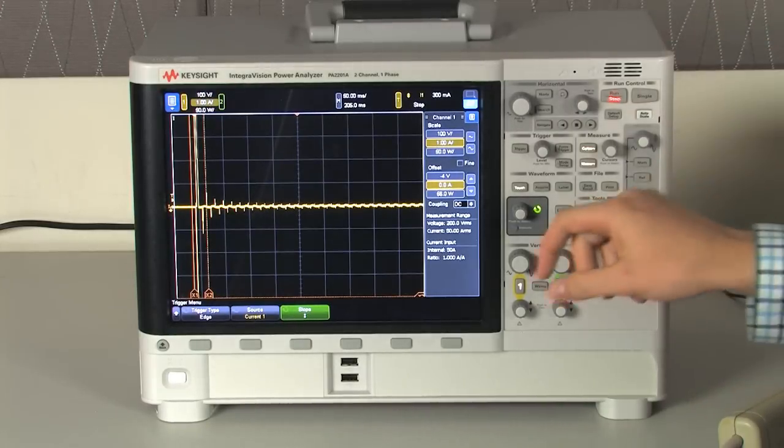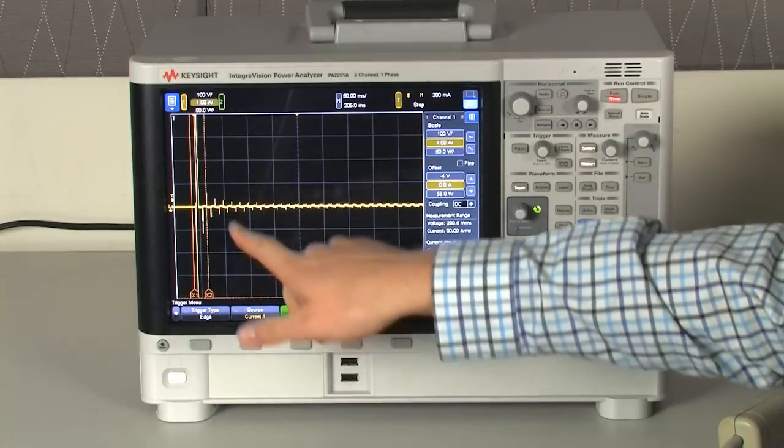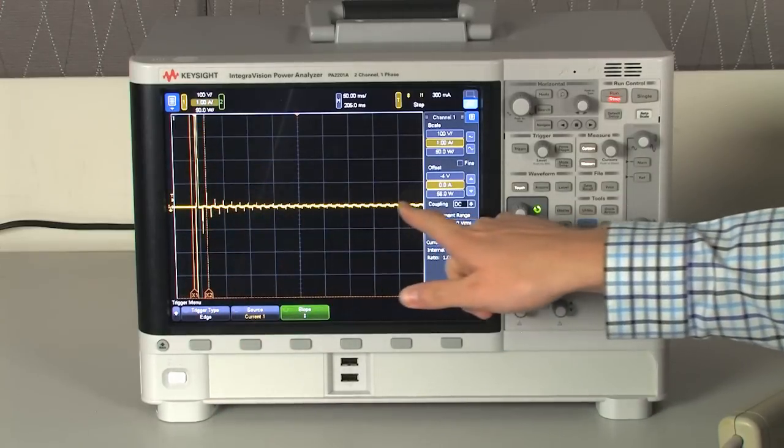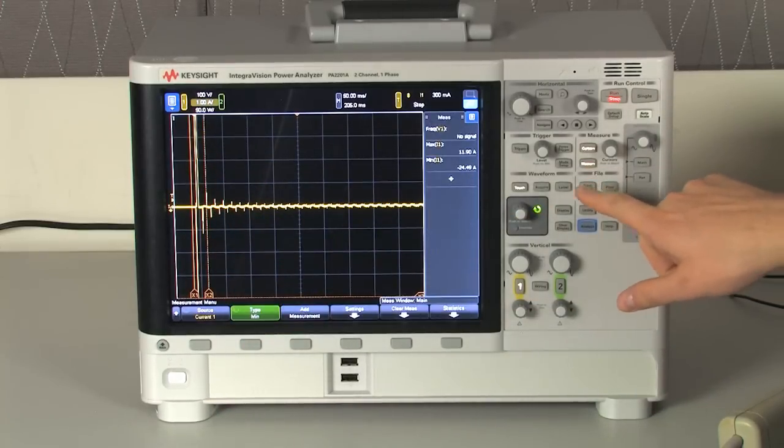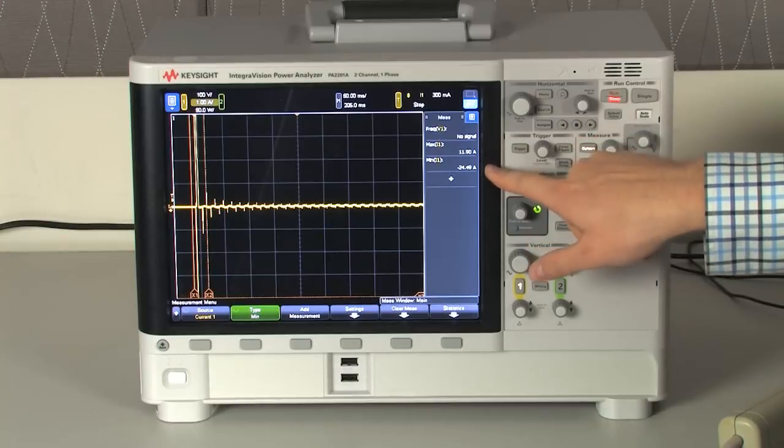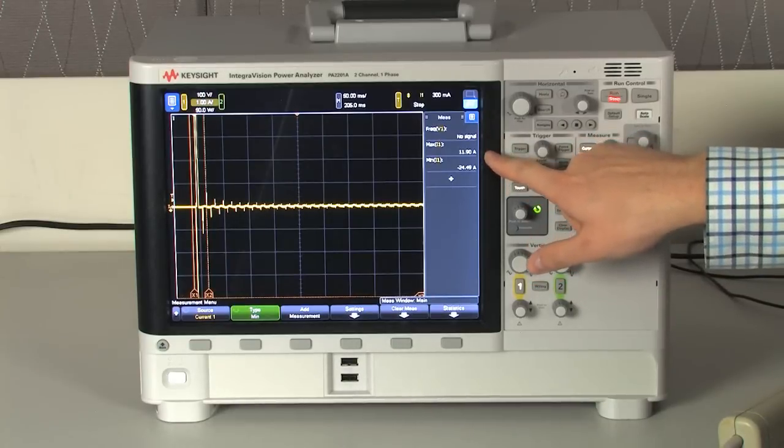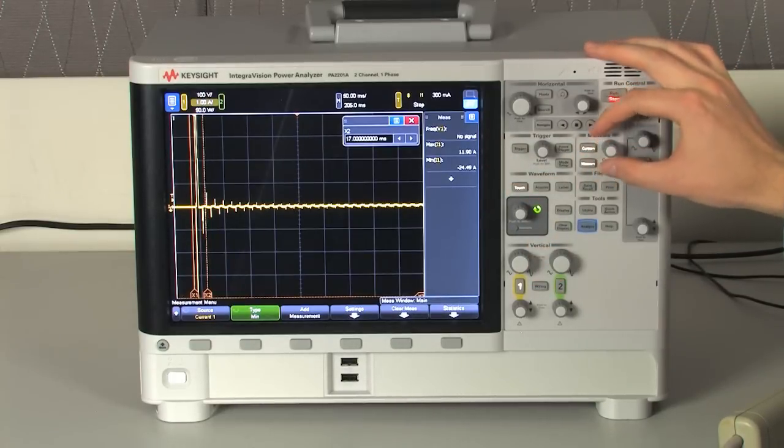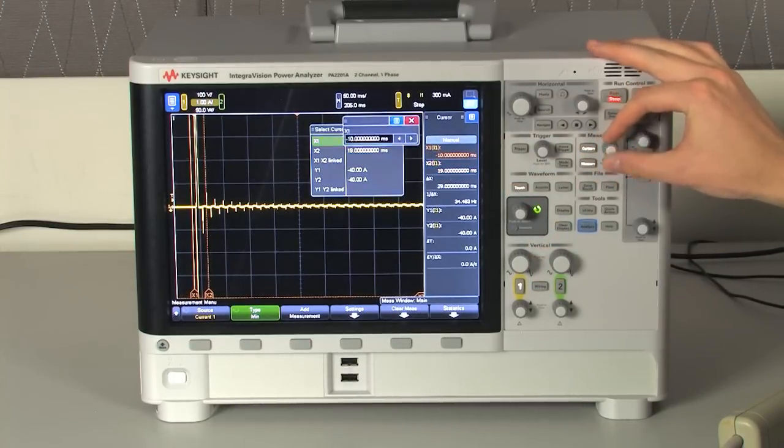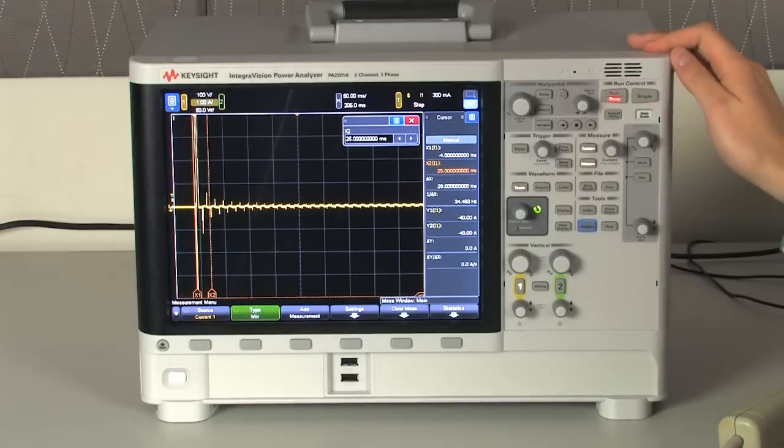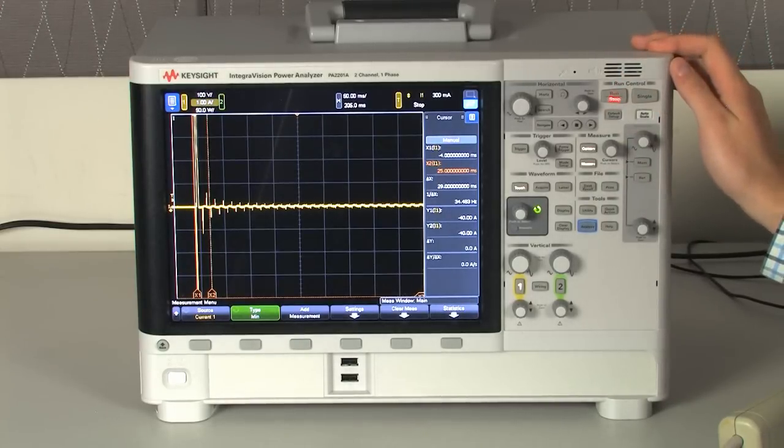There we go. So now we can see we had a huge inrush current and then gradually went down to steady state. If I go into the measure menu I can see what the peak of the inrush current was and I can use the cursors to measure the time of the inrush current event. As you can see the scope-like features of this power analyzer make it very easy to measure inrush current.